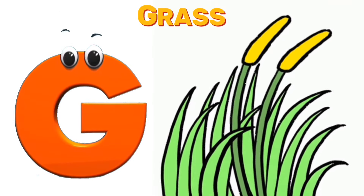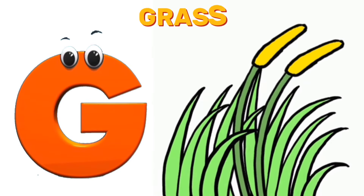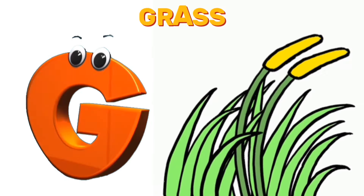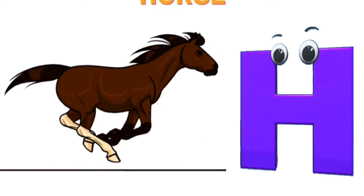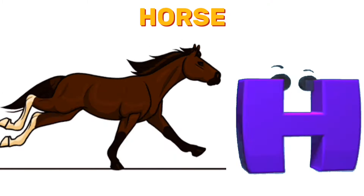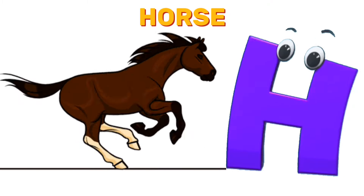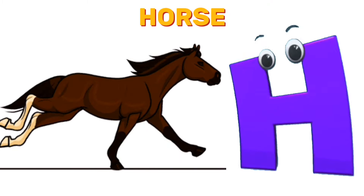G is for grass. G, G, grass. H is for horse. H, H, horse.